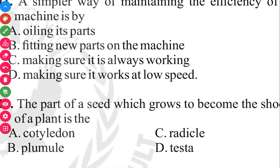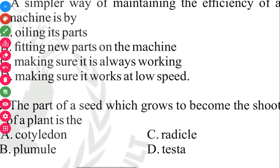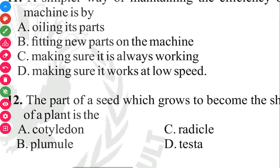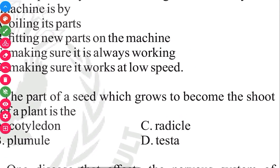Question 12. The part of a seed which grows to become the shoots of a plant is the plumule. The answer to question 12 in 3, 2, 1 is plumule.